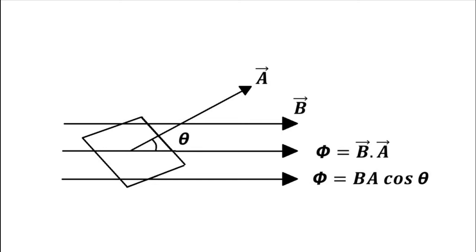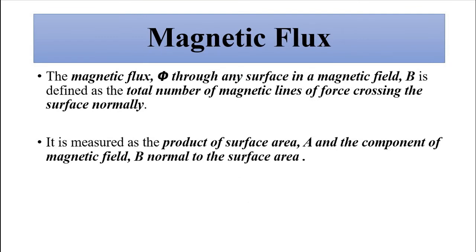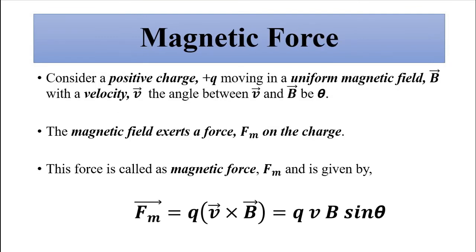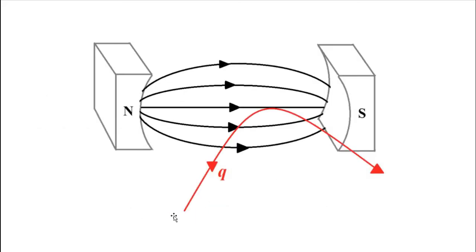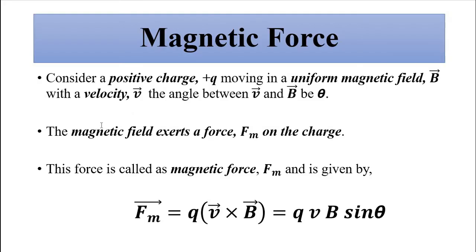This covers magnetic field, magnetic flux density, and magnetic flux. Another important concept is magnetic force, which describes the magnetic force exerted on a charge moving in a uniform magnetic field. Let us say we have a positive charge Q moving in a magnetic flux density B vector with a velocity v vector. The angle between the velocity vector and the magnetic flux density is theta.